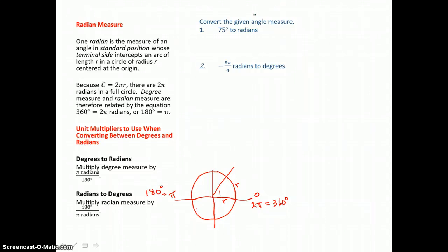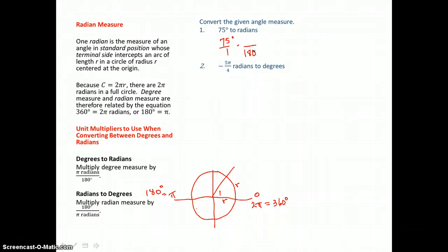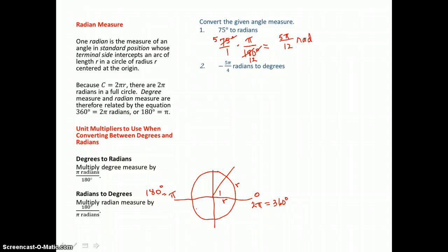We use this fact to convert 75 degrees to radians. I use a unit multiplier — multiply by a form of one — in order to not change the value but to change the unit. I want to get rid of degrees, so I put 180 degrees in the denominator, equivalent to π radians. Cancelling degrees top and bottom, 15 goes into 75 five times and into 180 twelve times. Multiplying across, I have 5π/12 radians, equivalent to the 75 degrees we started with.